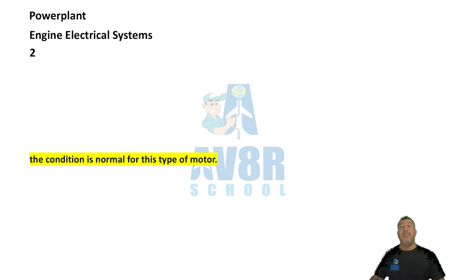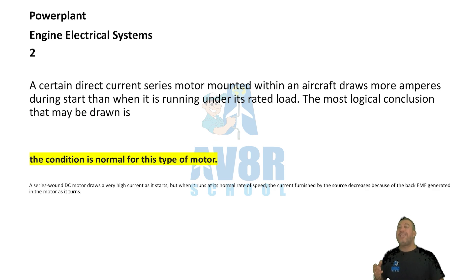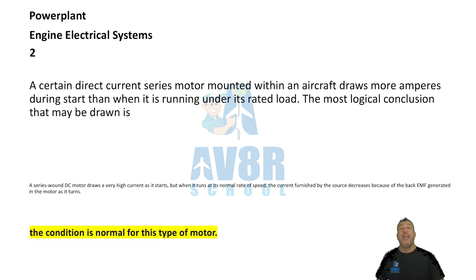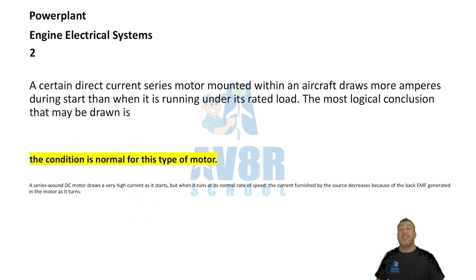Number 2. A certain direct current series motor mounted within the aircraft draws more amperes during starting than when it is running under load. The most logical conclusion is that this is a normal condition — of course you're going to draw more amps when you're just starting it. The condition is normal for this type of motor.